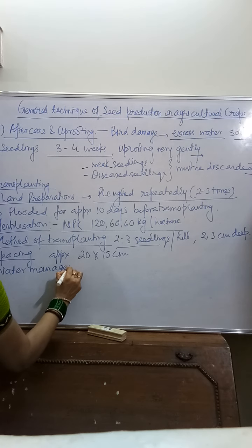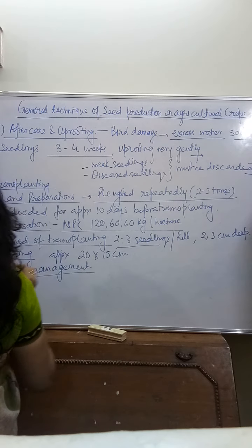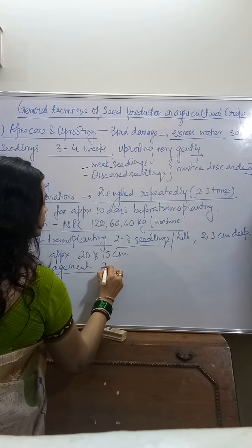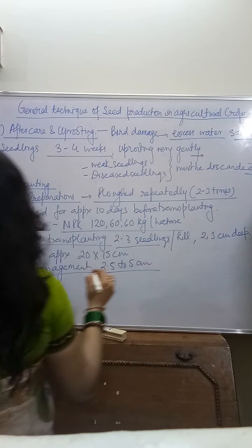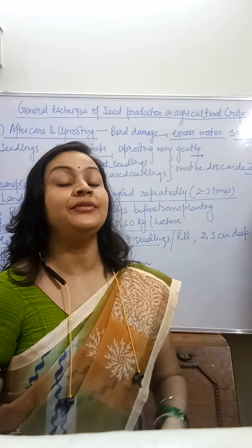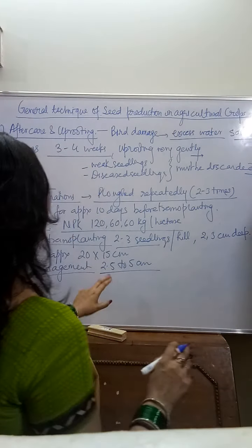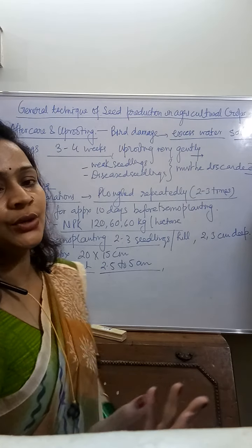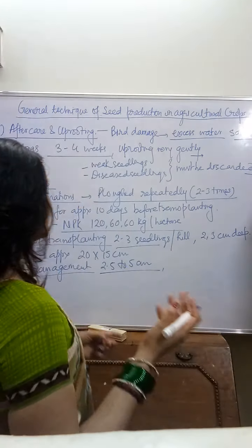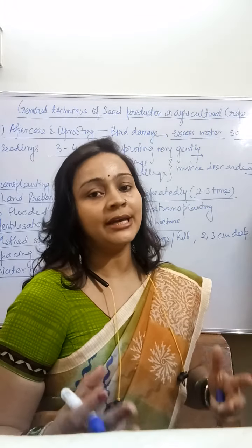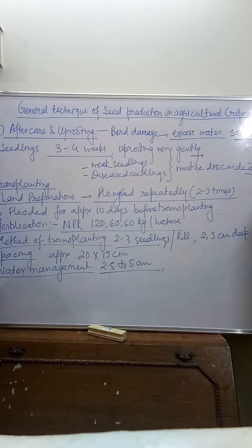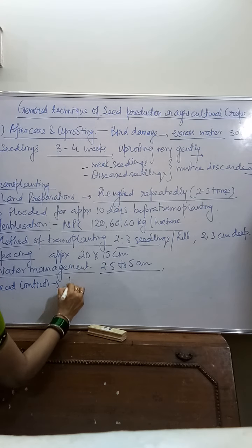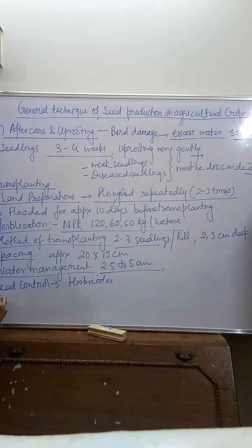Water management: transplantation के दिन 2.5 to 5 cm water irrigation करते हैं। Rice की cropping के लिए कोई hard and fast rule नहीं होता — जब भी ज़रूरत लगे properly irrigate कर देंगे। Weed control के लिए herbicides या other applied chemicals use करेंगे।